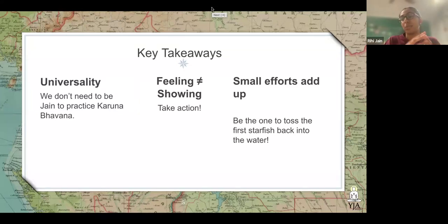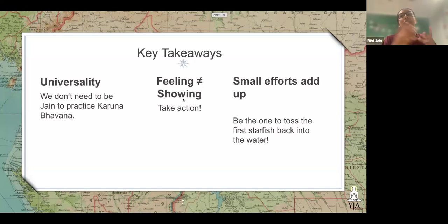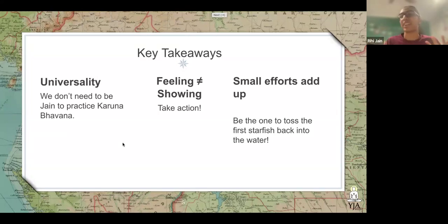Building off of taking action: those small efforts do add up. Being the first person to toss the first starfish back into the water — or to heal that first child — is a very important first step. When you toss something into the water, it creates a ripple, and that ripple has the potential to spread and get everyone around it to join in on the effort. All it takes is one person to start the movement of showing that compassion — that karuna bhavana — that we can all implement in our lives.